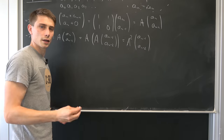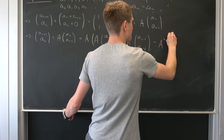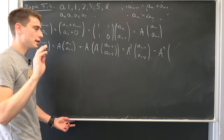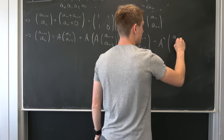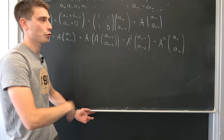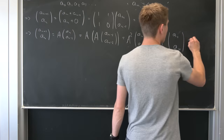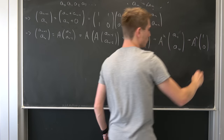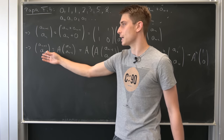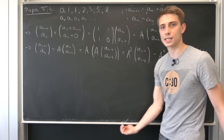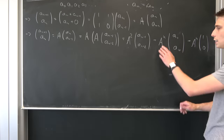We can keep repeating this n times, so we end up with A to the nth power times the last two members, which would just be [a_1, a_0]. Those are just one and zero. Our goal is now to read the expressions for a_{n+1} and a_n in one straight line, and that's quite easy — all we really have to do is diagonalize A to the nth power.